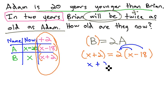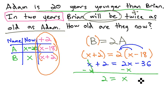Distribute the 2 to get x plus 2 equals 2x minus 36. Subtract x from both sides, so the variable is only on one side. 2 equals x minus 36, and finally add 36 to both sides. This tells us that x is equal to 38.